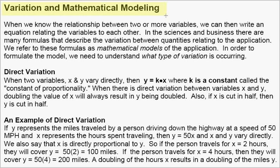In this section, we are going to look at variation in mathematical modeling. The first type of variation we are going to look at is direct variation. When two variables, x and y, vary directly, then we will have the relationship y equals k times x, where k is a constant, and we call that constant the constant of proportionality.